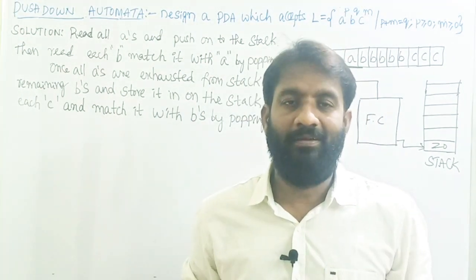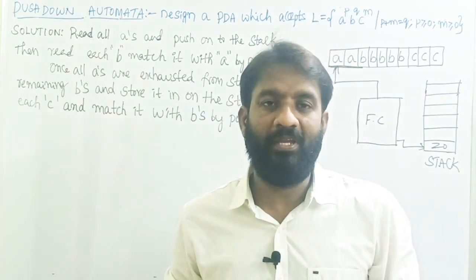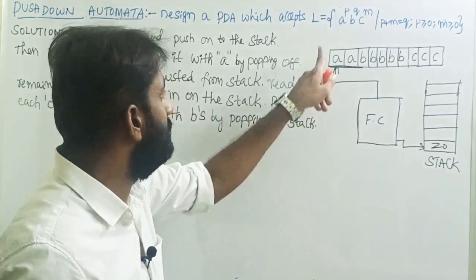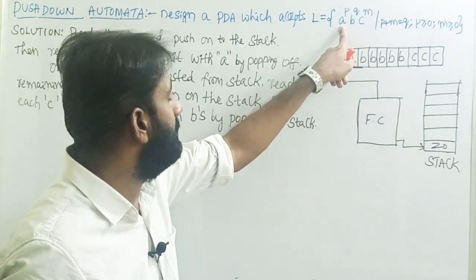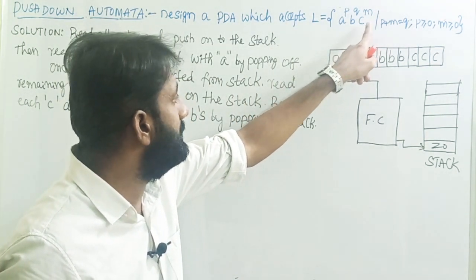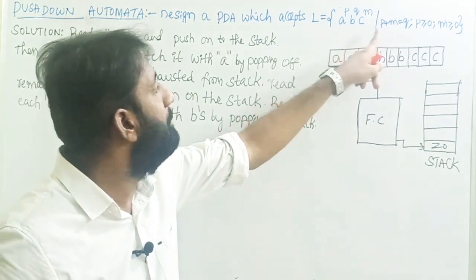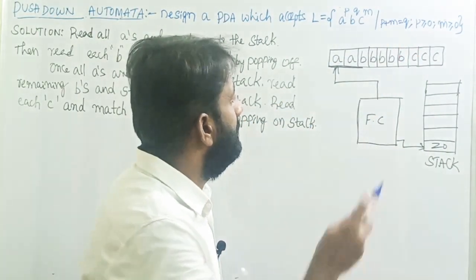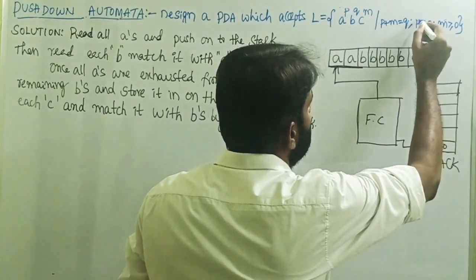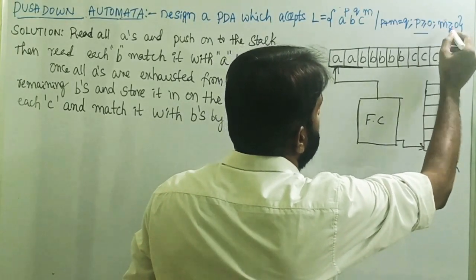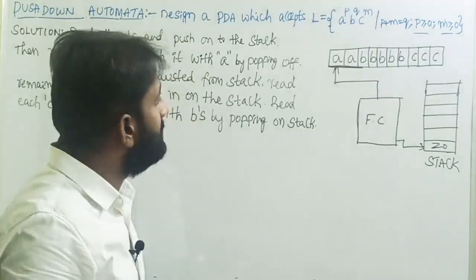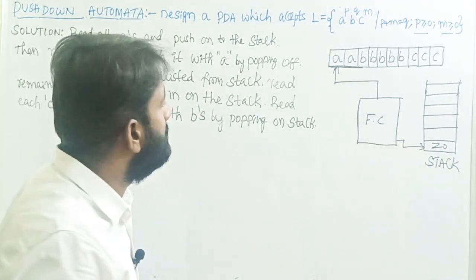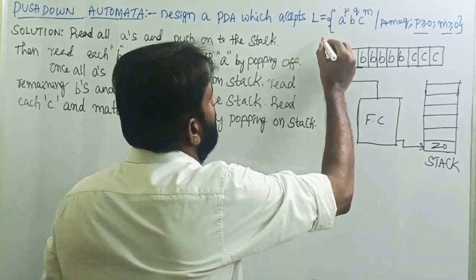Welcome back. Today the topic is: design a pushdown automata for the language L equals A^P B^Q C^M such that P plus M equals Q, where P is greater than or equal to 0 and M is greater than or equal to 0. First, find out the logic: the number of A's plus number of C's equals the number of B's, meaning the sum of A's and C's equals B's.